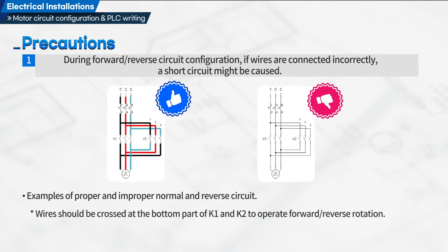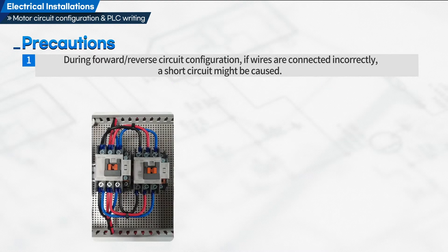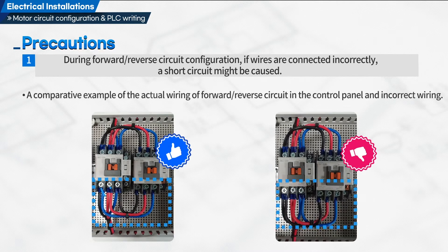Examples of proper and improper forward reverse circuit. Wires should be crossed at the bottom part of K1 and K2 to operate forward reverse rotation. A comparative example of the actual wiring of forward reverse circuit in the control panel and incorrect wiring is shown.